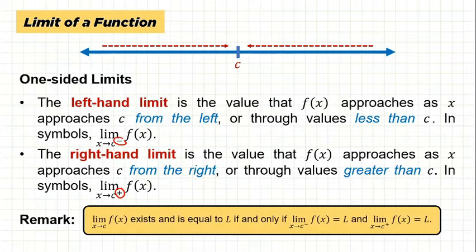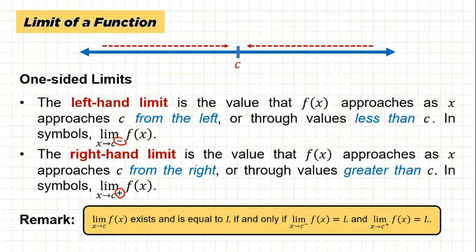The remark states: the limit of f(x) as x approaches c exists and is equal to L if and only if the left-hand limit equals L and the right-hand limit also equals L. In other words, the limit of a function only exists if and only if both the left-hand limit and the right-hand limit exist and are equal. If they don't both exist or aren't equal, the limit does not exist.